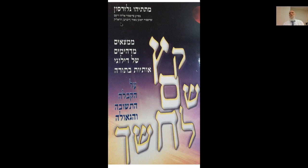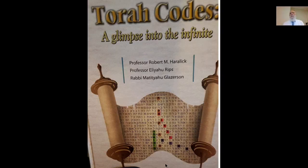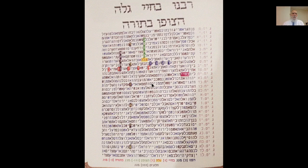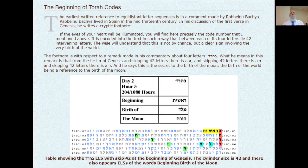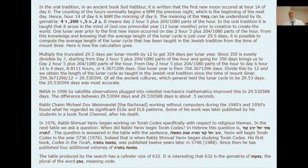What you see here is from a Hebrew book which I did with Professor Ripps and Robert Aralek, called 'Into Darkness.' And then we have a lot of material in the book 'Torah Codes: A Glimpse Into the Infinite,' with Professor Robert Aralek from Dental Center University in New York, Professor Elia Ripps from the Hebrew University, and myself, Rabbi Glelson. In this book you can find all these things — very, very important. And on the site of Professor Aralek, Torah.us, you can find more.